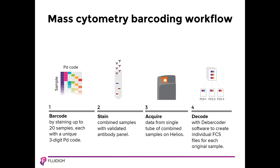The mass cytometry barcoding workflow proceeds as follows: First, up to 20 samples are each stained with a unique three-digit palladium code. Next, the barcoded samples are then combined and stained, processed, and acquired in a single tube. Finally, the single barcoded FCS file is de-barcoded using CyTOF software to create individual FCS files for each original sample.